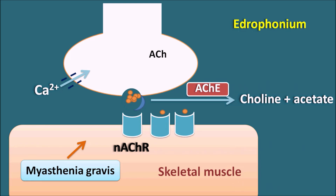When we give the Edrophonium injection, Edrophonium inhibits the action of the acetylcholinesterase enzyme, thereby increasing the chance of binding of acetylcholine with the nicotinic acetylcholine receptors at the skeletal muscle. In this way, Edrophonium can improve the muscle strength in the patient. If the Edrophonium injection improves the muscle strength, it indicates the muscle weakness is due to myasthenia gravis. If muscle strength is not improved, the weakness may not be due to myasthenia gravis.